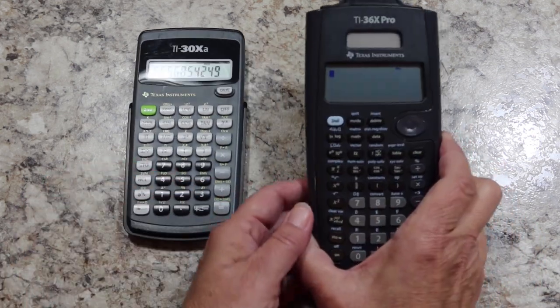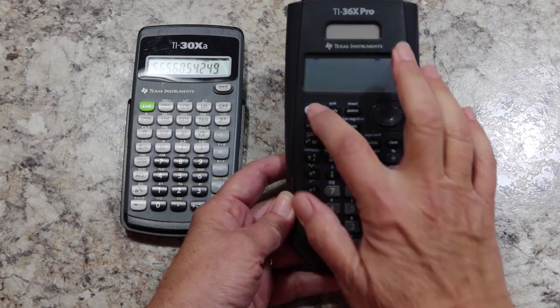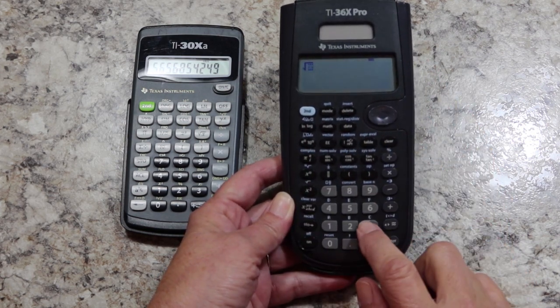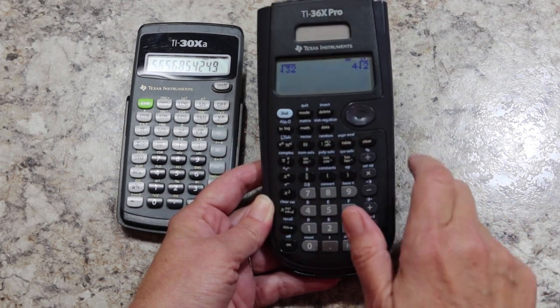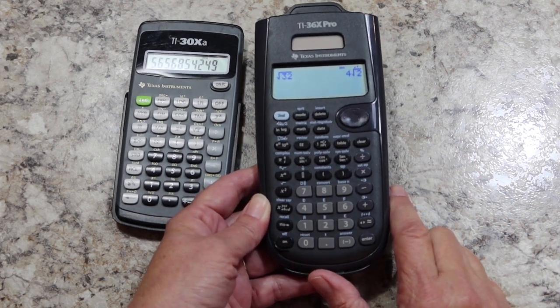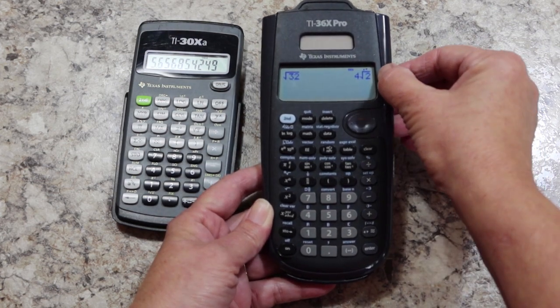Whereas, since this calculator has something called math print, I can get a square root. I can push 32, enter. Now, it gives me four square root of two. I don't know if you can see that there.